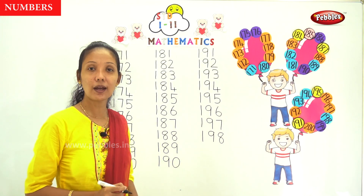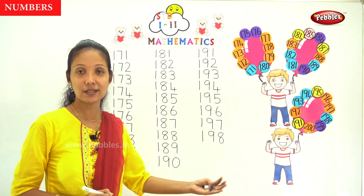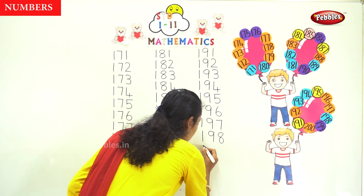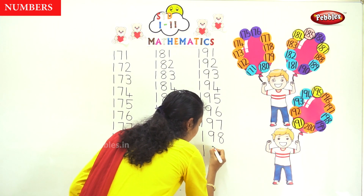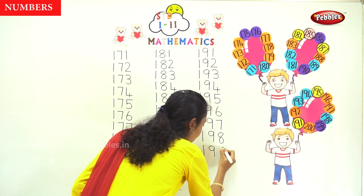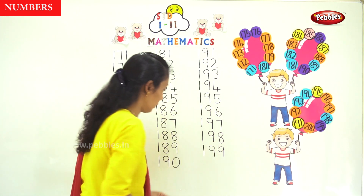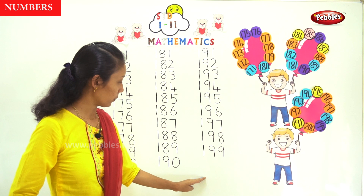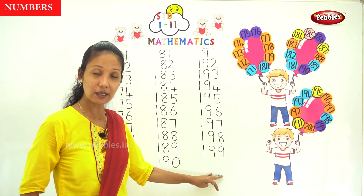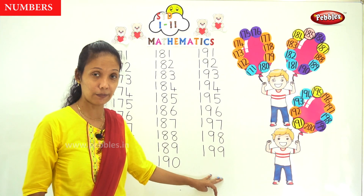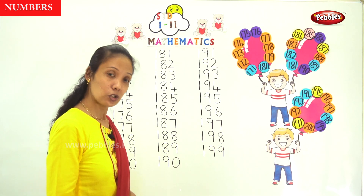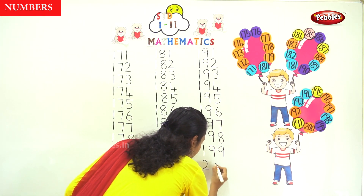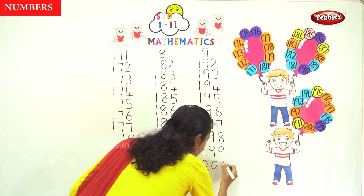Now after 198, the next number — 199. 199. Now what is the last number today? Yes — 200. That is 200. 200. 200. 100. 100. 180. 52. 182.